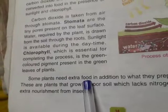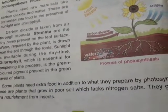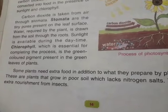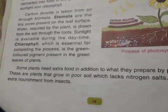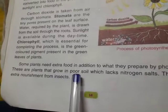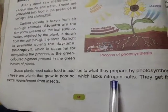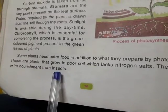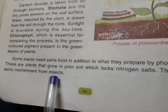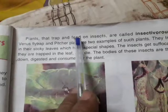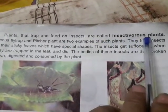Some plants need extra food in addition to what they prepare by photosynthesis. Some plants need extra minerals and extra food that they do not make themselves. These are plants that grow in poor soil which lacks nitrogen salts. They get these extra nutrients from insects. Such plants that trap and feed on insects are called insectivorous plants.